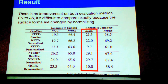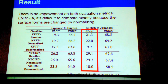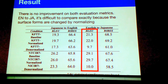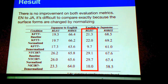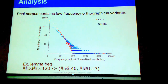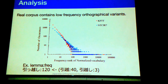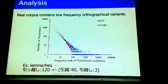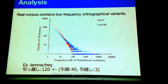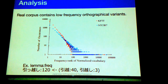In English-to-Japanese translation, you may see a slight improvement, but it is difficult to compare exactly because the surface forms are changed by normalization. We analyzed why normalization does not work well. This graph shows the frequency of orthographical variants, and it shows that the real corpus contains only low-frequency orthographical variants. So the effect is weak.